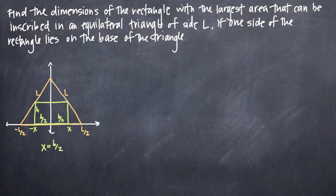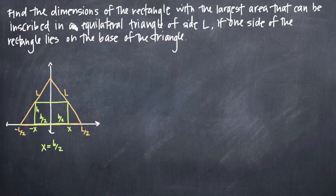In this particular problem, we've been asked to find the dimensions of the rectangle with the largest area that can be inscribed in an equilateral triangle of side L, as long as one side of the rectangle lies on the base of the triangle. The first thing we want to do is draw a picture. An equilateral triangle has all three sides of equal length, so the triangle here in orange has all sides labeled L — this side, this side, and the base of the triangle.